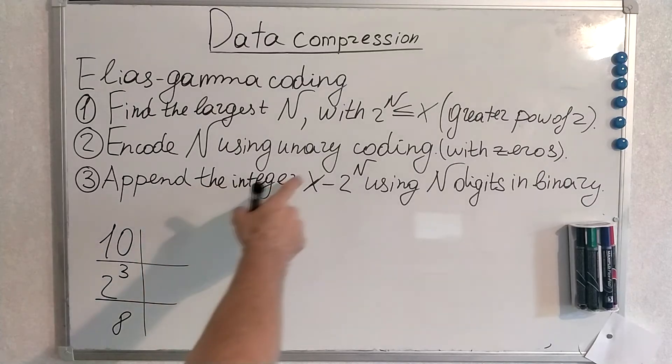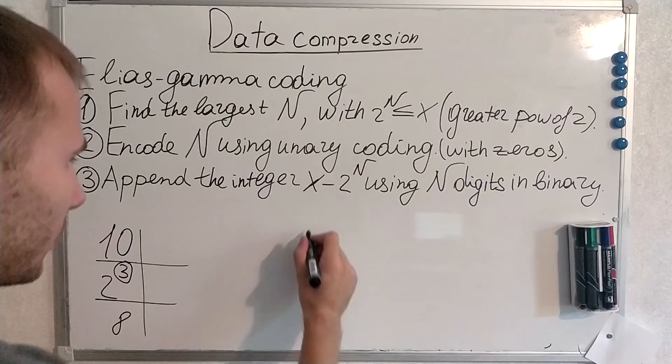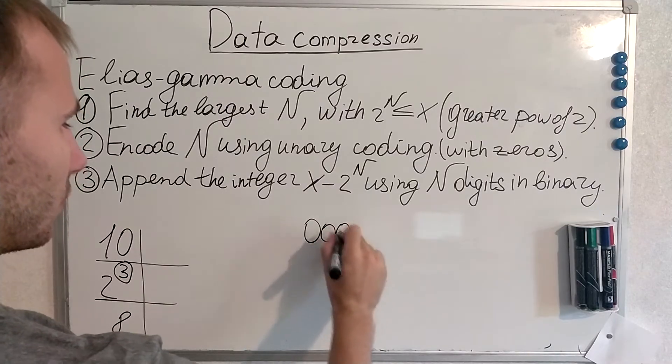I encode N using unary coding. We already know what unary coding is. N was 3. Unary coding is used with 0, so we will encode 0, 0, 0, 1.